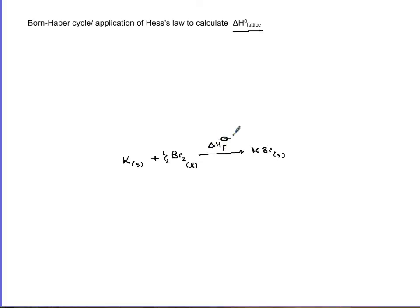One other thing we can do to potassium bromide is break it into its ions in gaseous state. That's known as delta H lattice, usually what you like to find out.